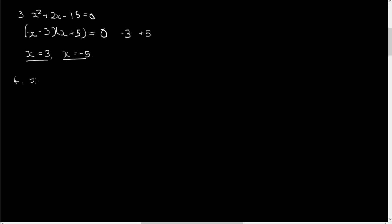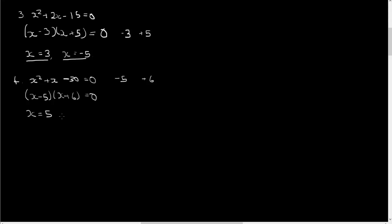Example four: x squared plus x minus thirty equals zero. We've set up our two brackets and we're looking for factors of minus thirty that add together to give plus one. Since it's minus thirty, one must be negative and one positive. Almost by inspection, minus five times plus six is minus thirty, and minus five plus six is plus one. So we write x minus five and x plus six. If x minus five equals zero, x equals five. If x plus six equals zero, x equals minus six. So we have two solutions: x equals five and x equals minus six.